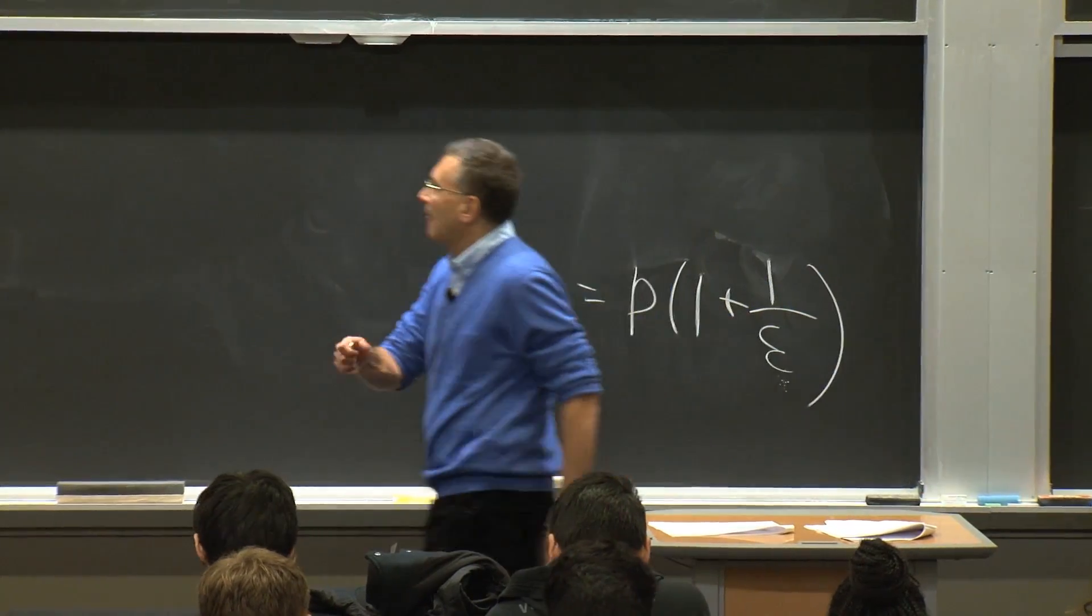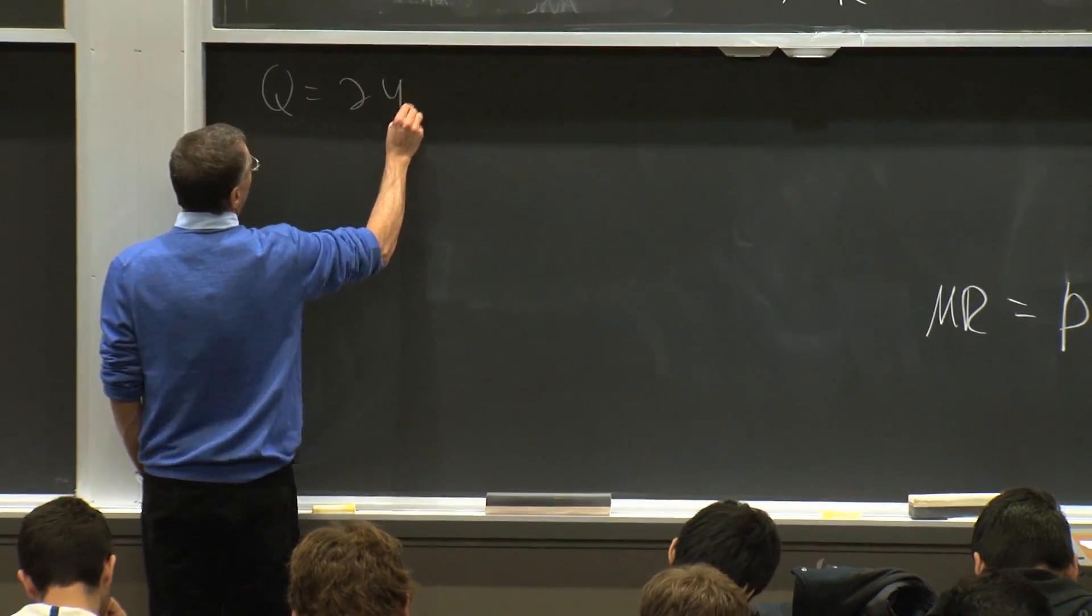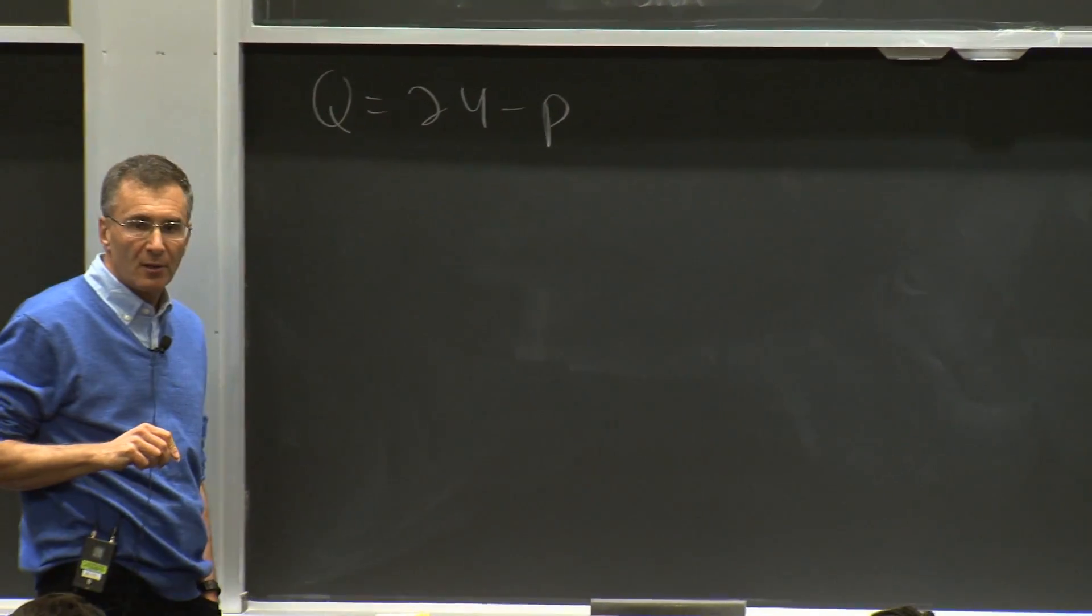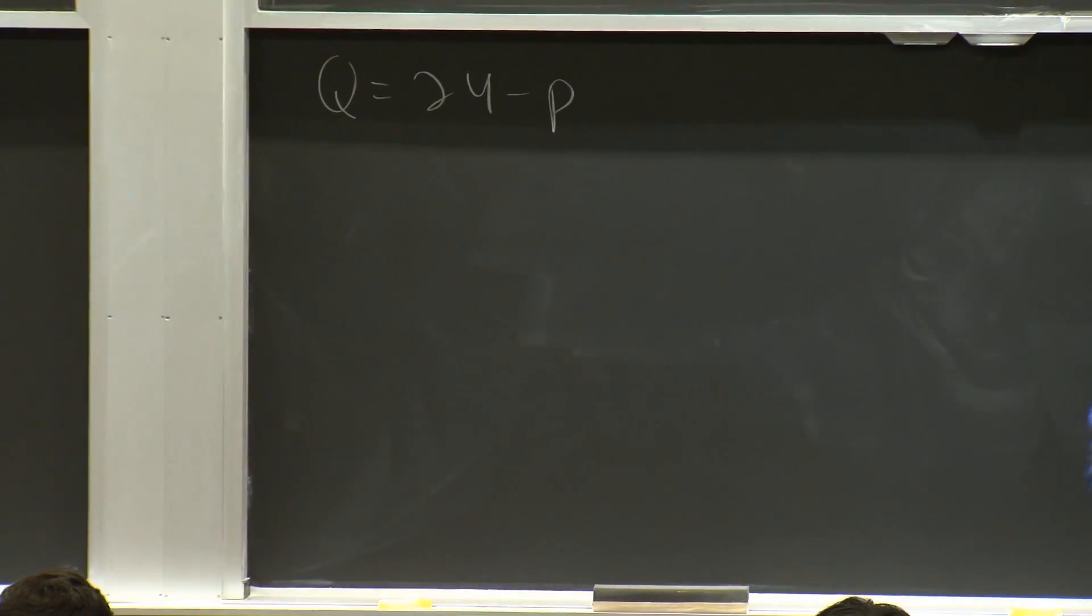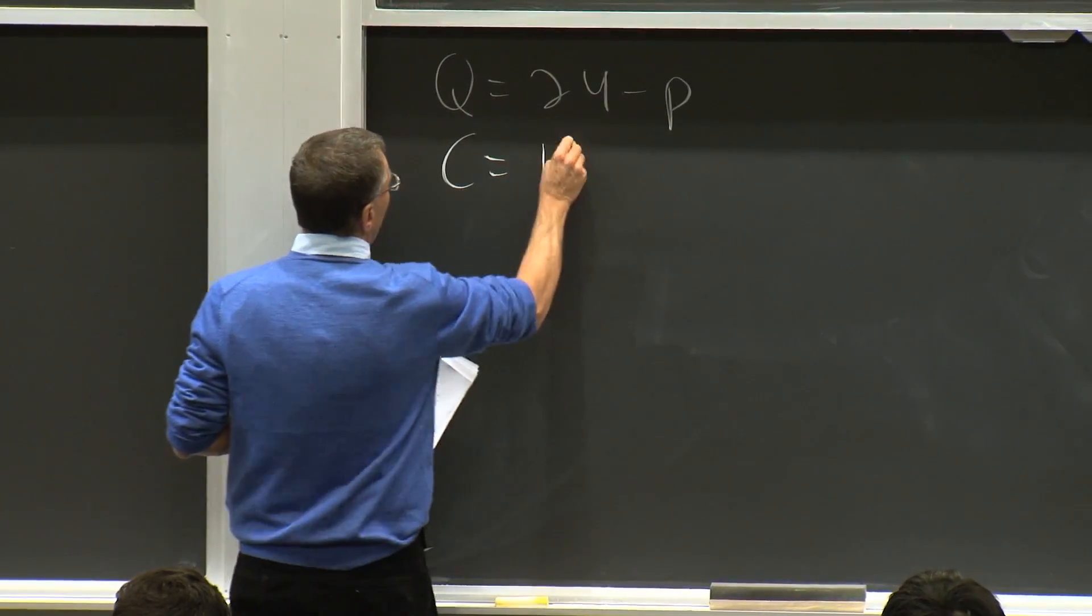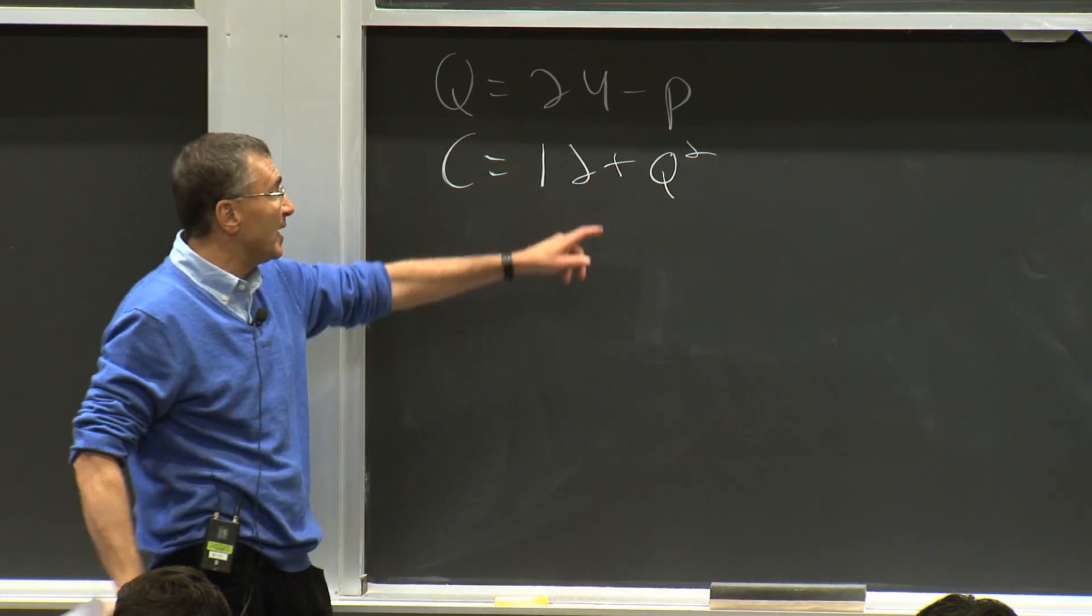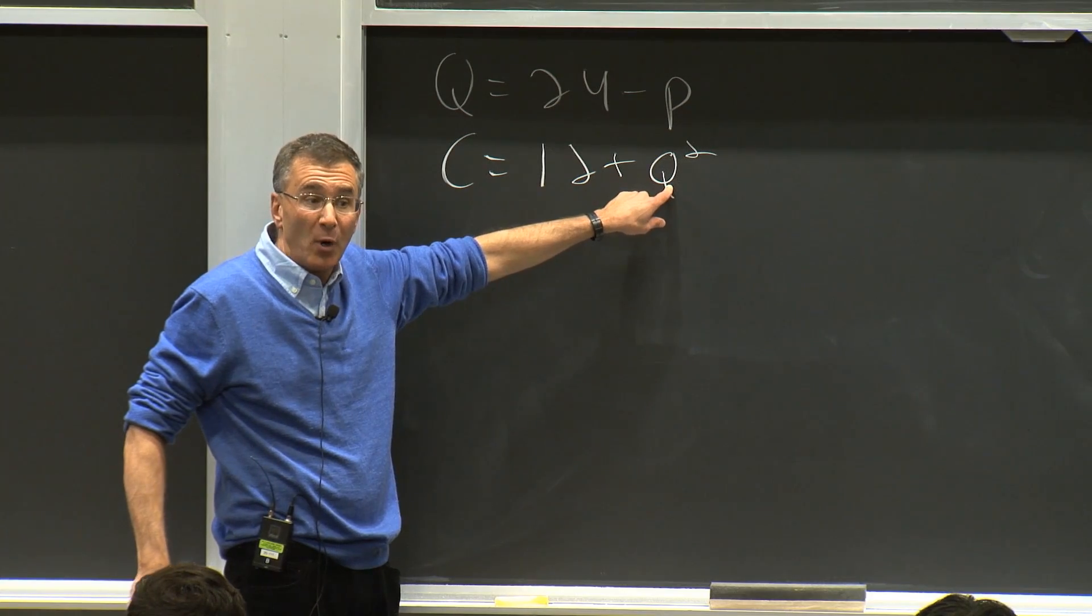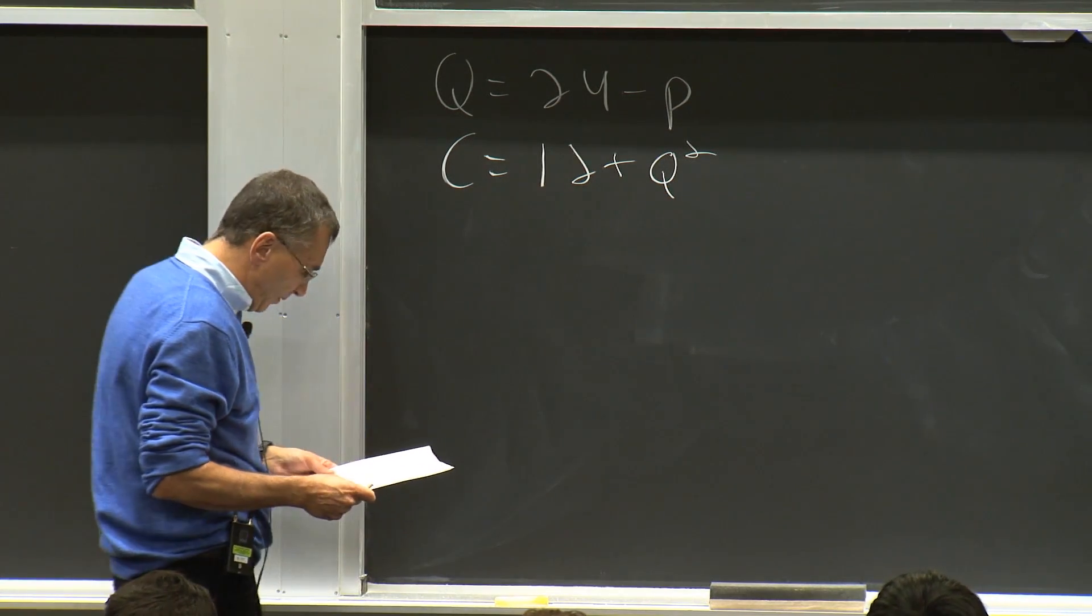Here's a monopolist. He faces demand of the form q equals 24 minus p. And we're going to say, in this case, we're going to assume that his cost function is c equals 12 plus q squared. Remember, that could be big Q or little q, because there's only one player in the market. I made it big Q, but it could be either. 12 plus q squared.